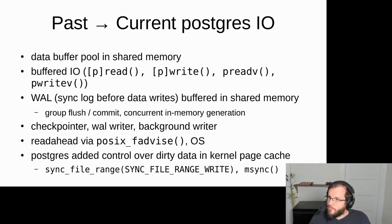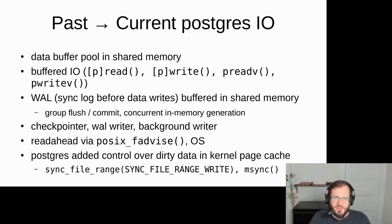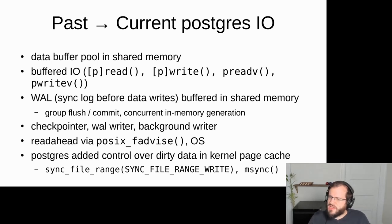The ring buffer size is not controlled by work_mem — it's a compile-time constant. Copy uses a comparatively large ring buffer, up to 16 megabytes. Vacuum uses something on the order of dozens of kilobytes.